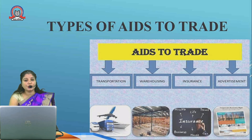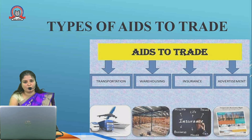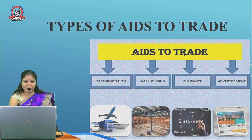Insurance covers the risk of business. Insurance helps the businessman to bear the risk — whenever there is a loss, insurance tries to cover those losses. Advertisement helps to market the goods. Advertisement gives information to consumers regarding various goods launched by different companies, what type of goods have been launched, and the usage of the product.